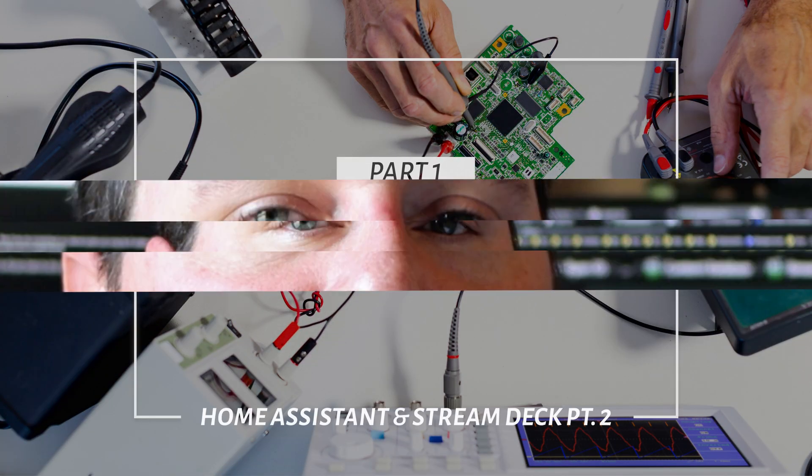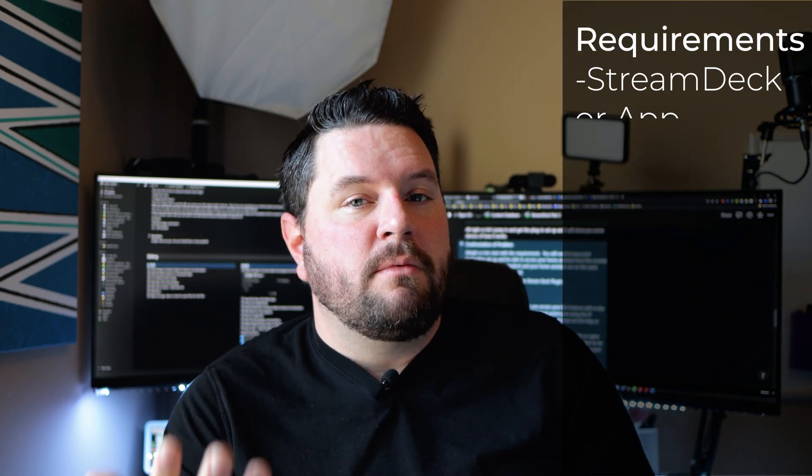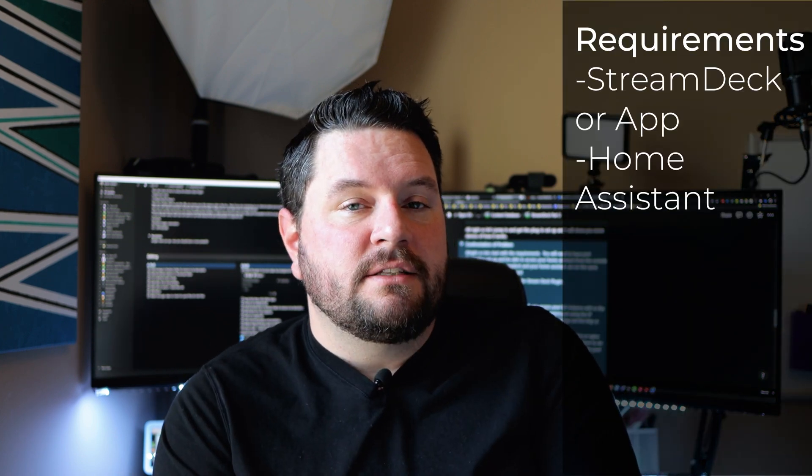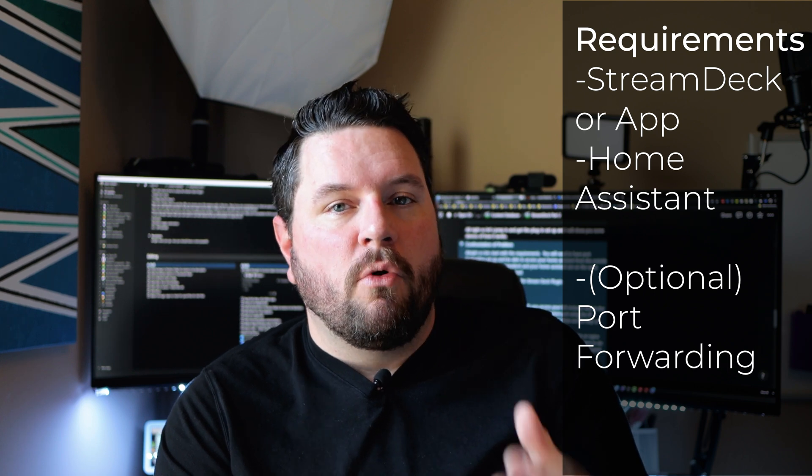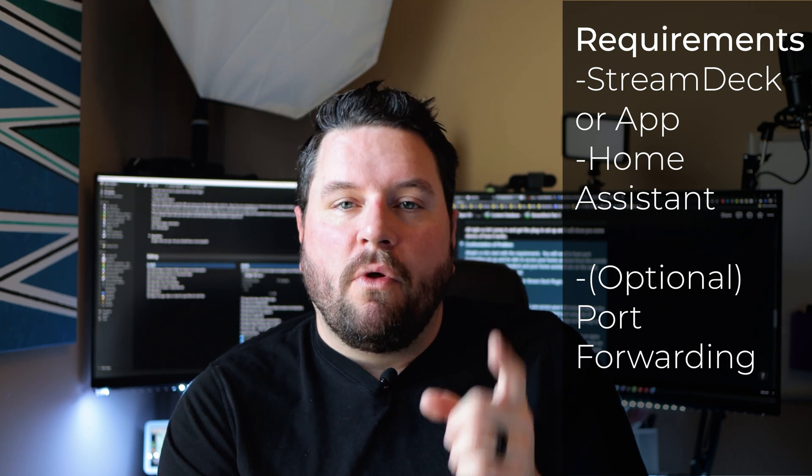The requirements for this project are fairly simple. All you need is a Stream Deck or the Stream Deck mobile app, a Home Assistant instance configured, and if you're using this outside your home, port forwarding. One thing to note: make sure you're running the latest version of the Stream Deck software, because they only introduced the store — where we're going to install the plugin — a few versions ago. So if you don't have the store, update to the latest version. Let's get started by installing the plugin.